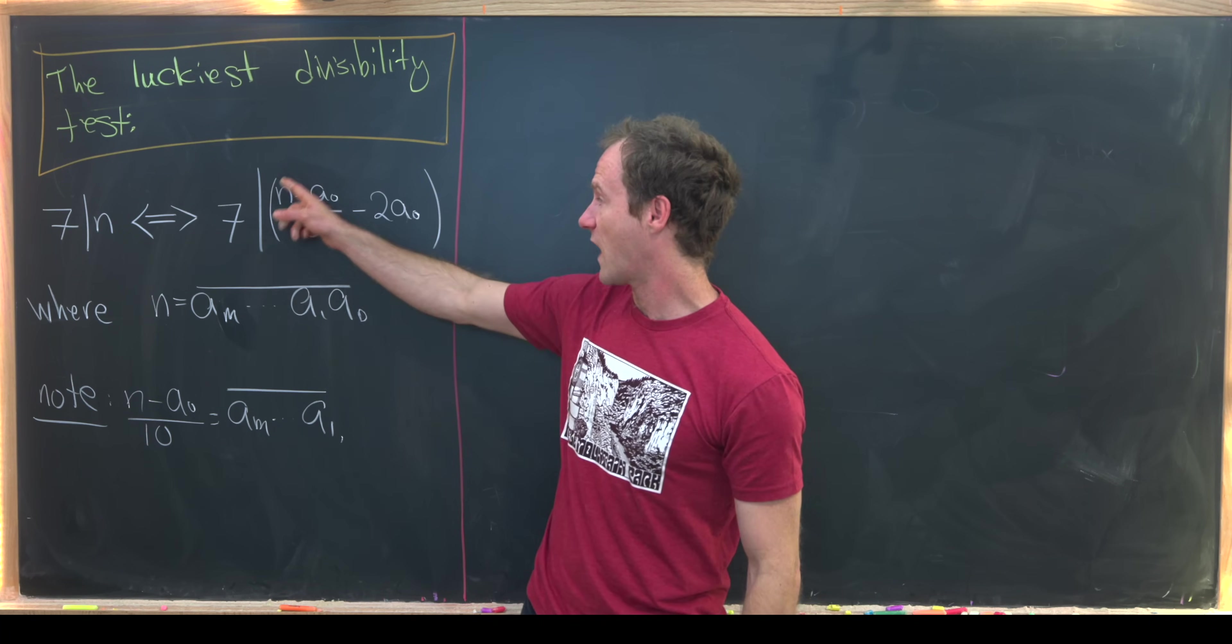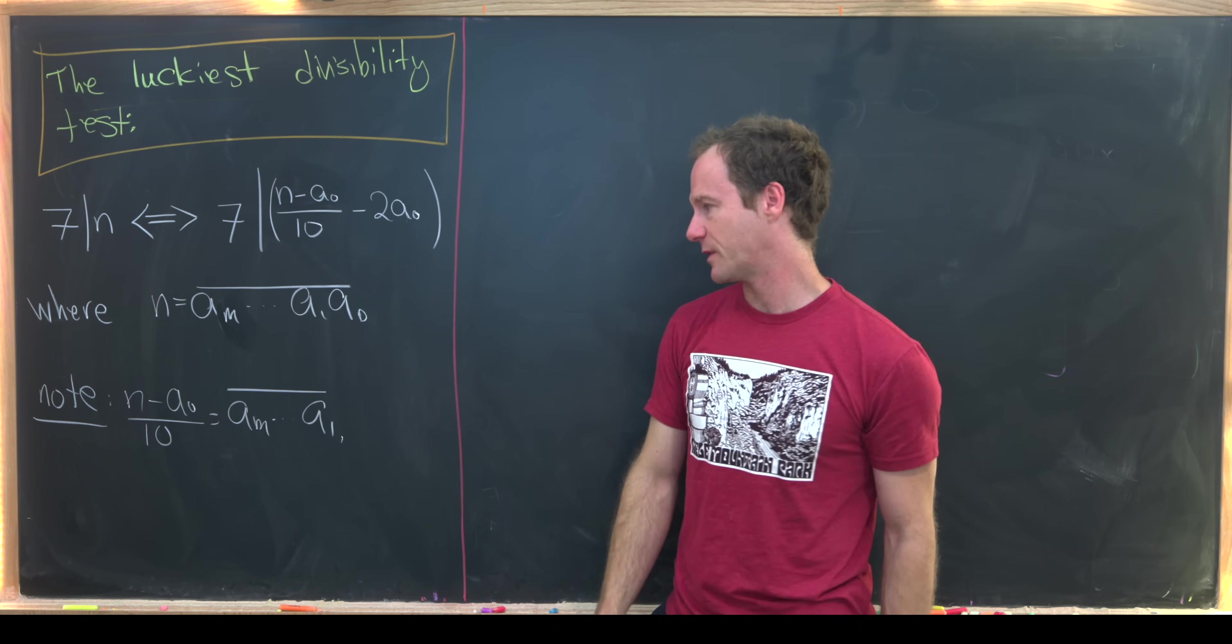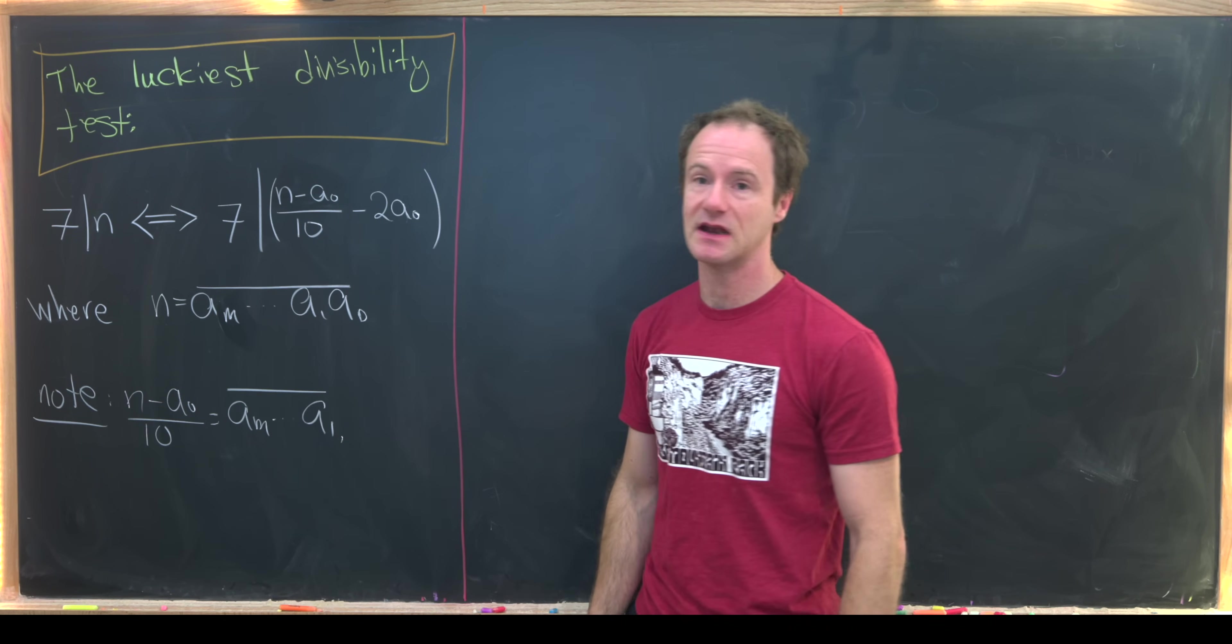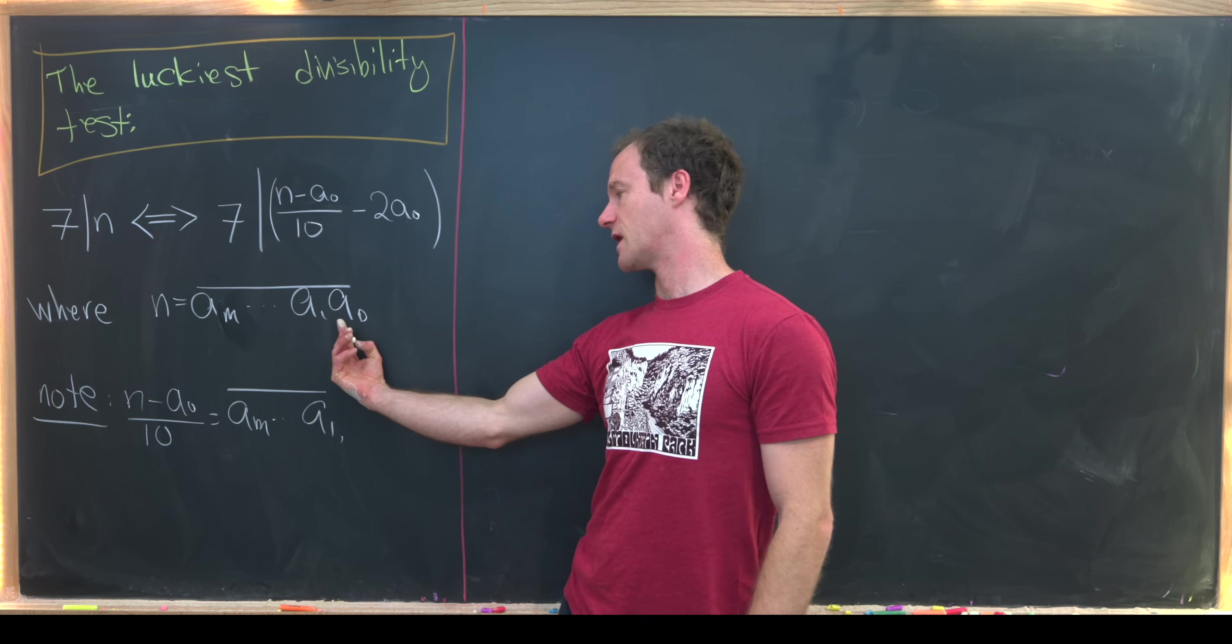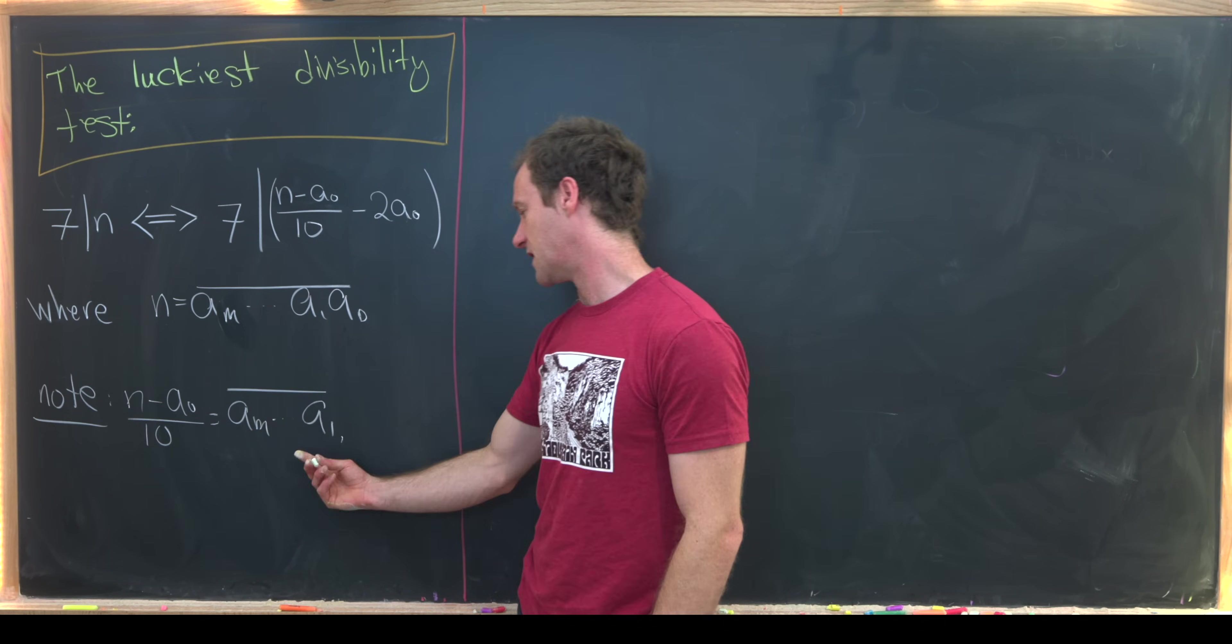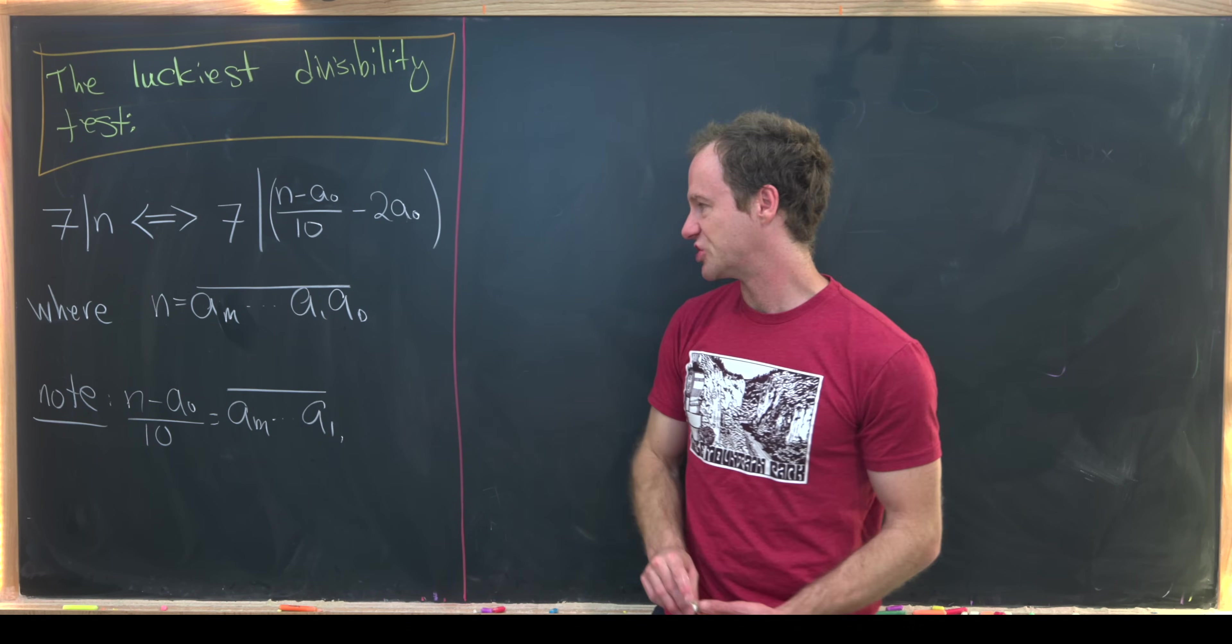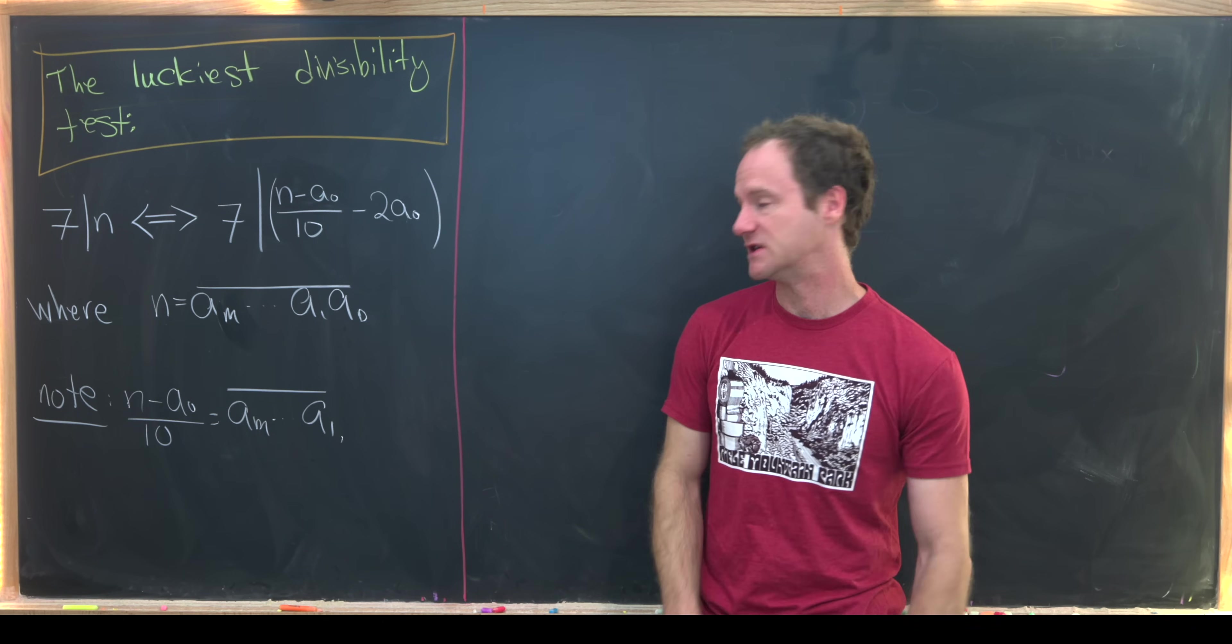Then our fraction here, which could be a little bit problematic, is not problematic because notice if we take n minus a naught, that just puts a zero right here, which means we can divide by 10 and we're left with the number that we get after just truncating off that ones digit.